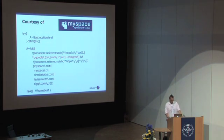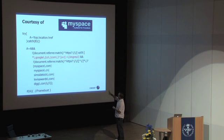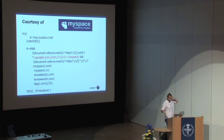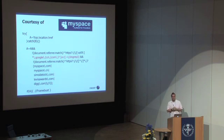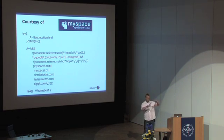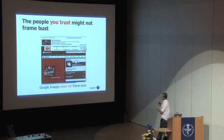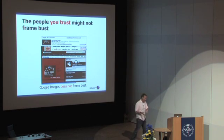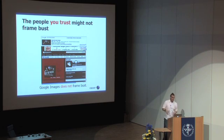This is MySpace. They have a referrer match where they want to allow lots of sites. The interesting one highlighted is Google's image results site — they allow image results to frame their profiles. The problem is Google's image results do not frame bust. So you can craft a specific URL, target a specific profile, then just frame Google Images and you're in the clear.